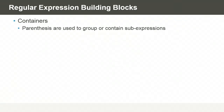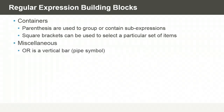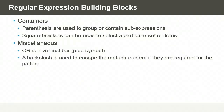For more complex regular expressions, we can group them using parentheses. Square brackets are used to select a particular set of items that appear within the square brackets. We can use the vertical bar or pipe symbol when we need to do an OR condition. Sometimes we want to take away the special meaning of meta-characters so that we can literally match them in our text, so we can precede those characters with a backslash to take away their special meaning.